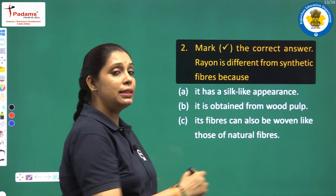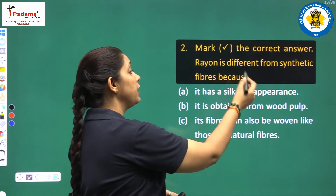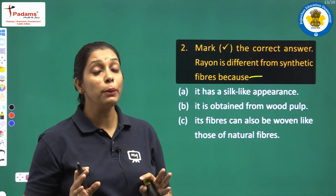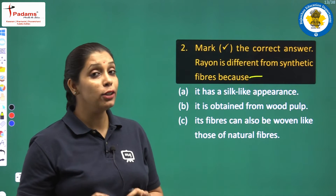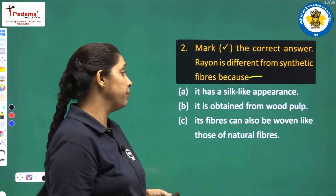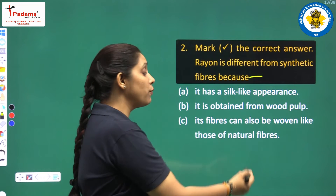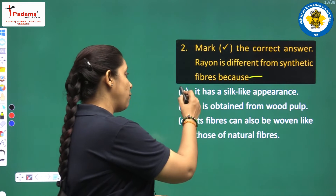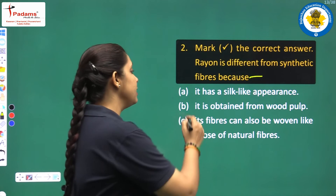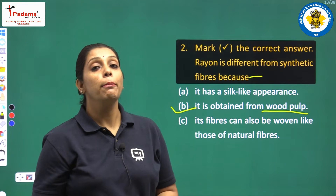You have to read the options and pick the correct one. First one is: rayon is different from synthetic fibers because — rayon is synthetic but it is not pure, it is semi-synthetic. It has a silk-like appearance; it is obtained from wood pulp; its fibers can be woven like those of natural fibers. After reading A, B, and C, the answer is: it is obtained from wood pulp. That is why it is not pure synthetic.